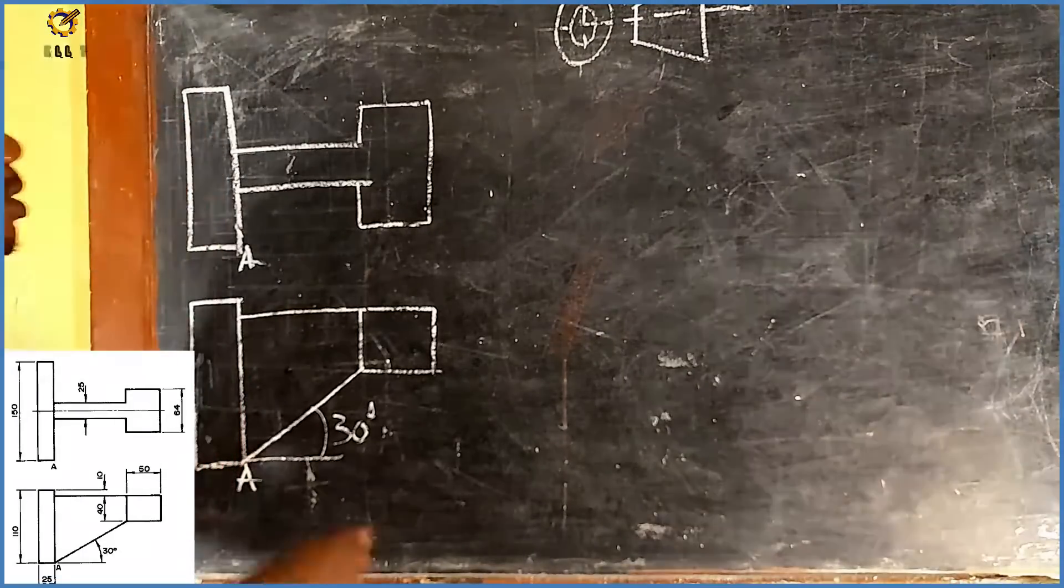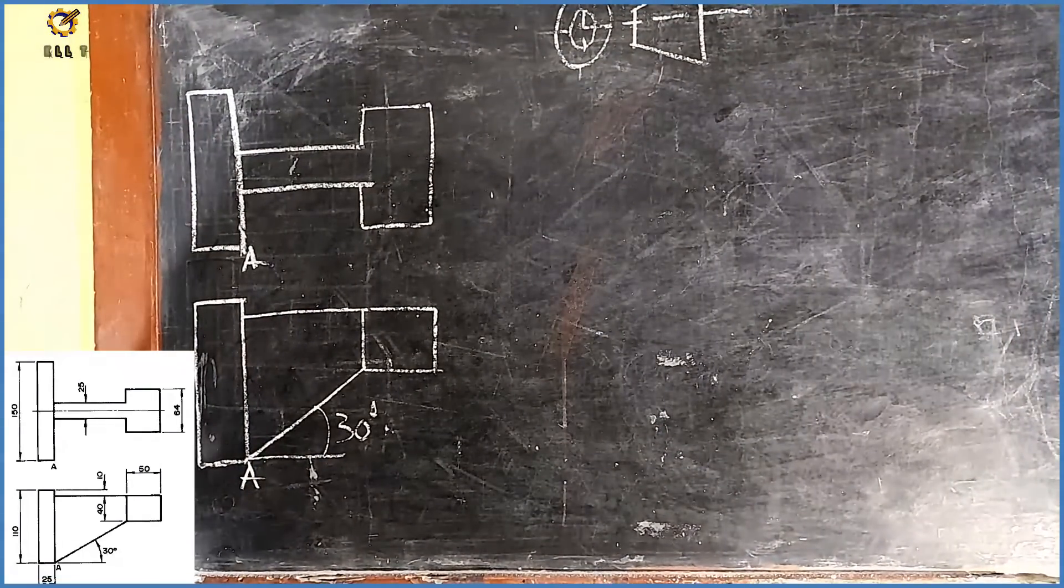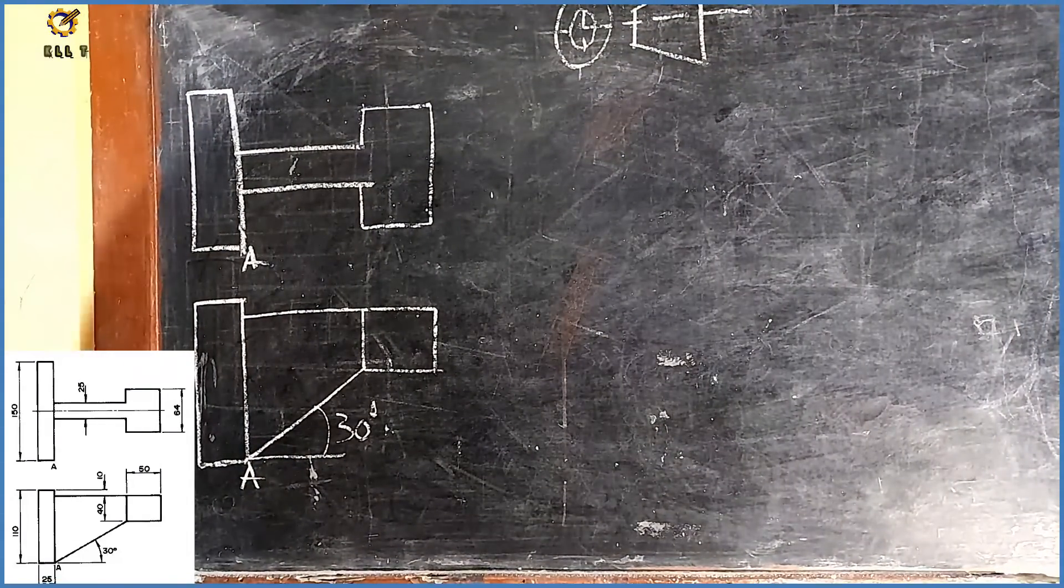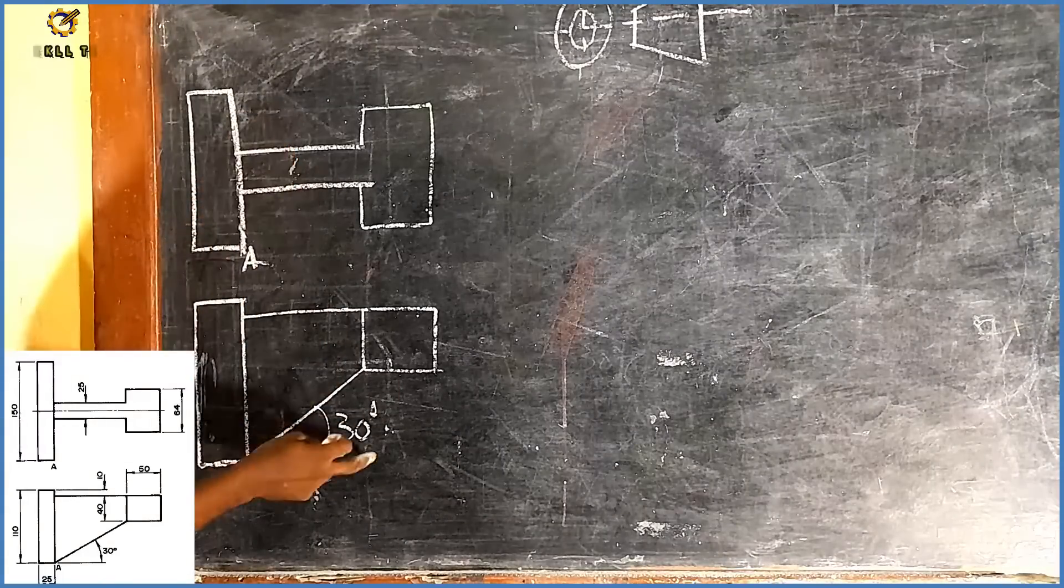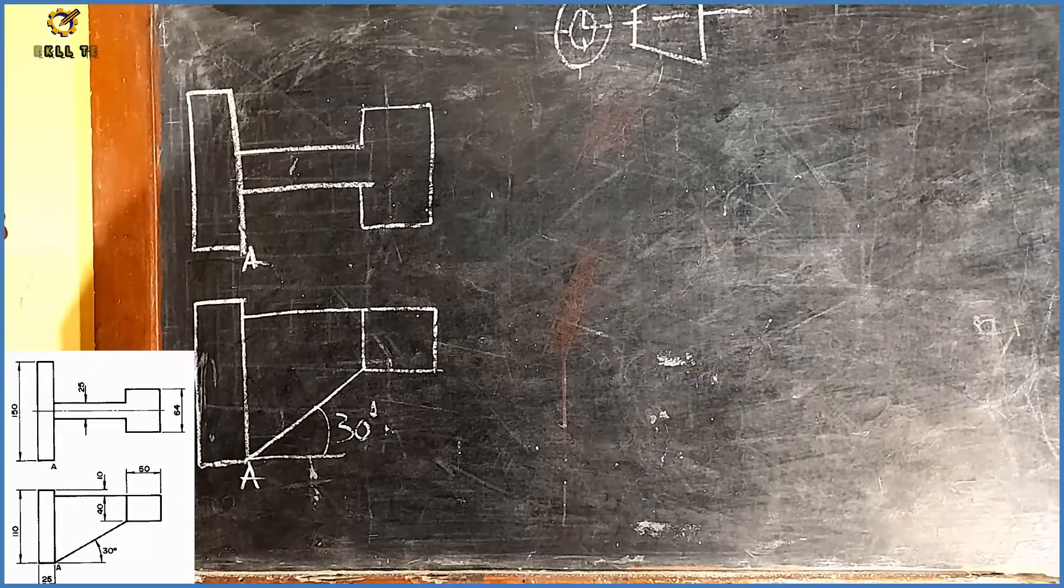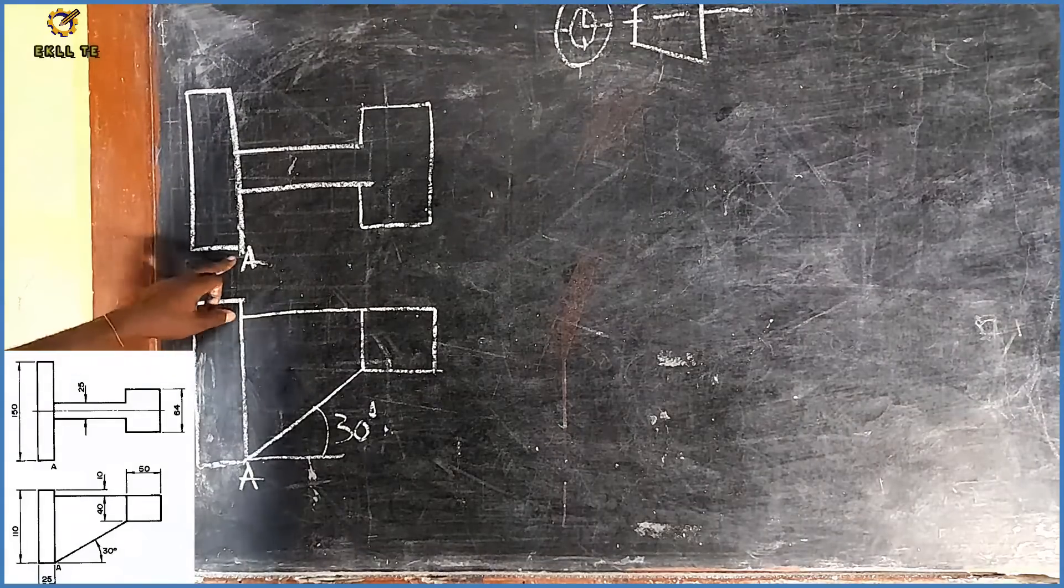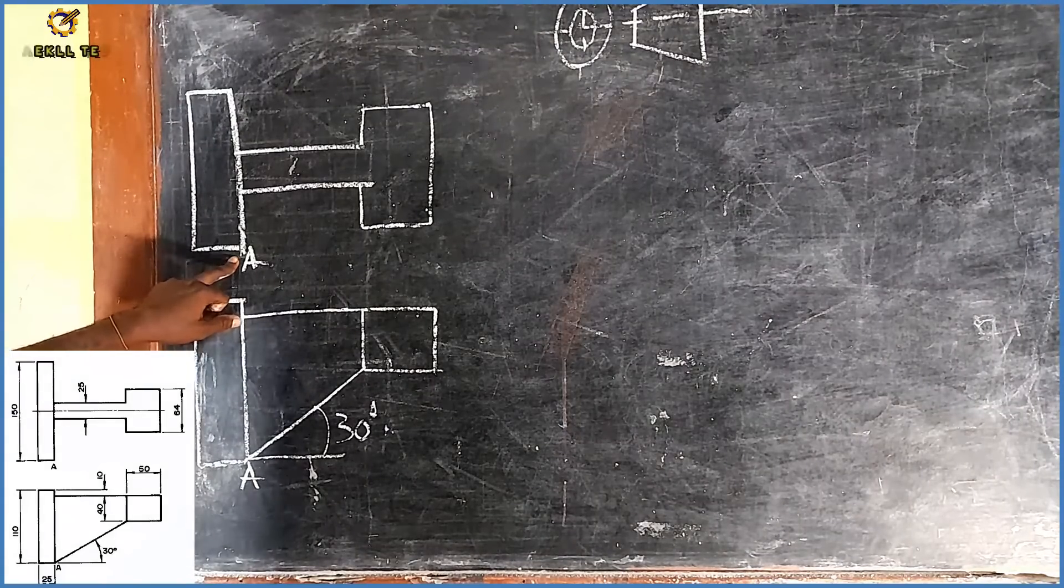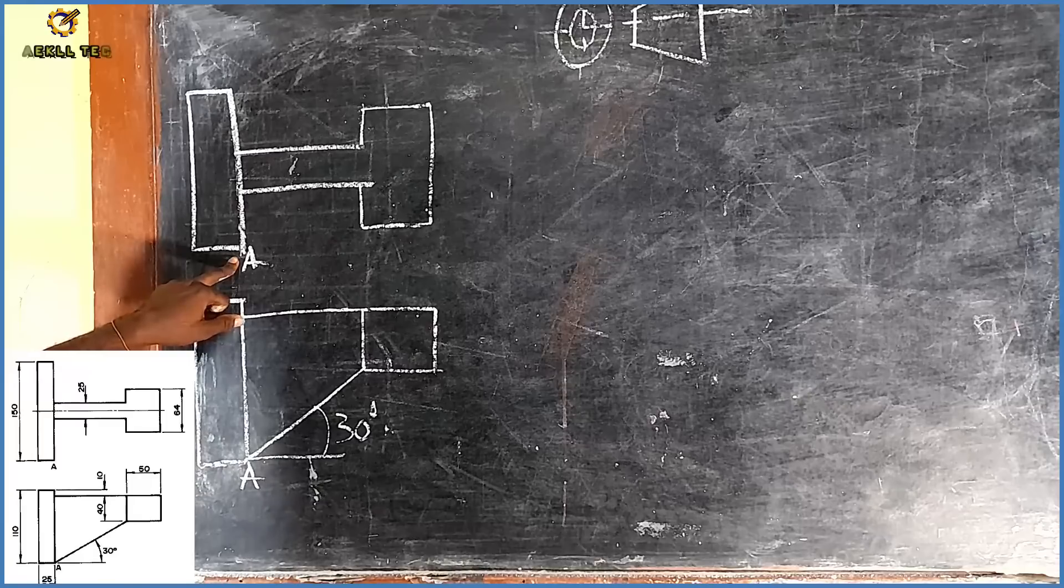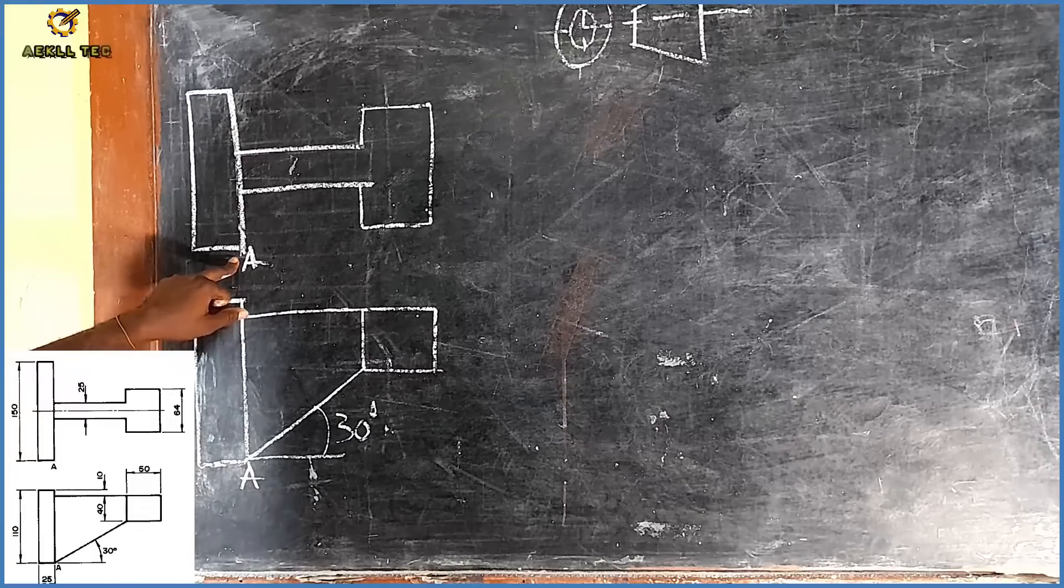The problem on screen is in third angle orthographic projection. At the top is the plan view, while underneath is the elevation view. If you convert this to isometric projection making point A as the lowest point, how will our object look?